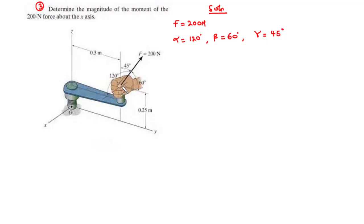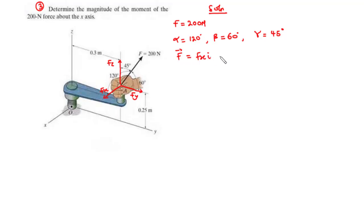Here we have the x-component of the force, so that is Fx; the y-component of the force, Fy; and the z-component of the force, Fz. The force F can be represented as a Cartesian vector as Fxi plus Fyj plus Fzk.